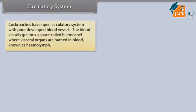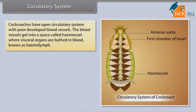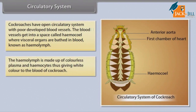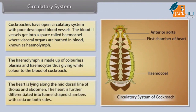Circulatory System: Cockroaches have an open circulatory system with poorly developed blood vessels. The blood vessels open into a space called the haemocoel, where visceral organs are bathed in blood known as hemolymph. The hemolymph is made up of colorless plasma and haemocytes, giving white color to the blood of the cockroach. The heart lies along the mid-dorsal line of the thorax and abdomen, and is differentiated into funnel-shaped chambers with ostia on both sides.